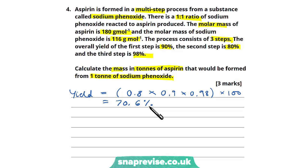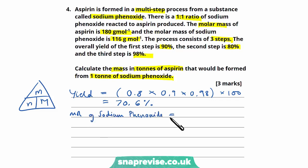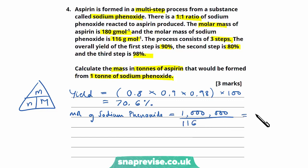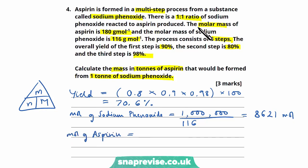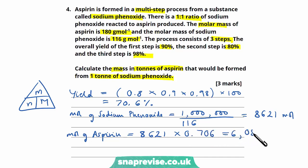The next step is to calculate how many moles of sodium phenoxide we start with, remembering that moles = mass ÷ molar mass. We start with one tonne — that's one million grams — divided by the molar mass of 116 g/mol, giving us 8,621 moles of sodium phenoxide. Now, calculating the moles of aspirin formed: since there's a one-to-one ratio, that's 8,621 moles. Accounting for the yield of 70.6%, we multiply by 0.706 to give us 6,086 moles of aspirin formed.